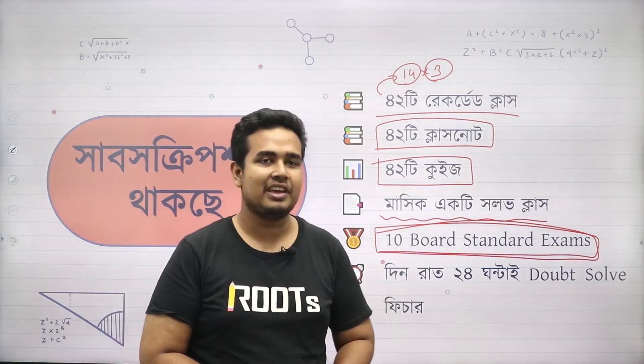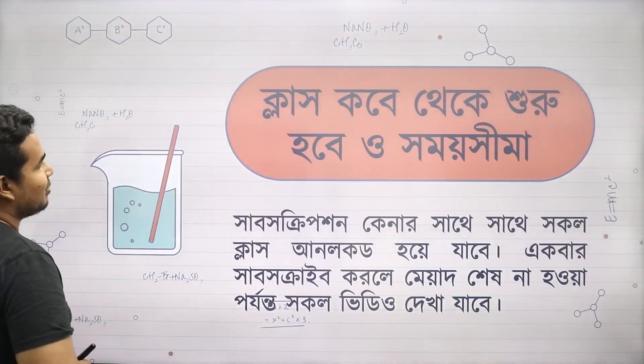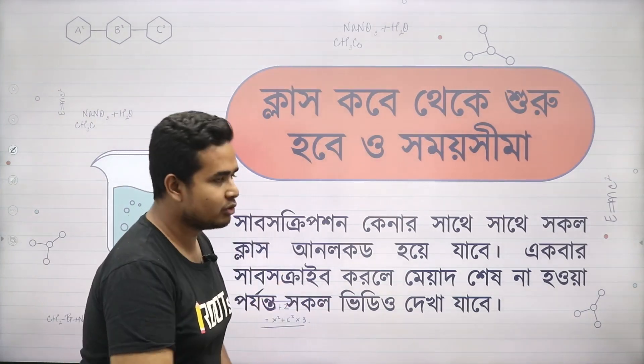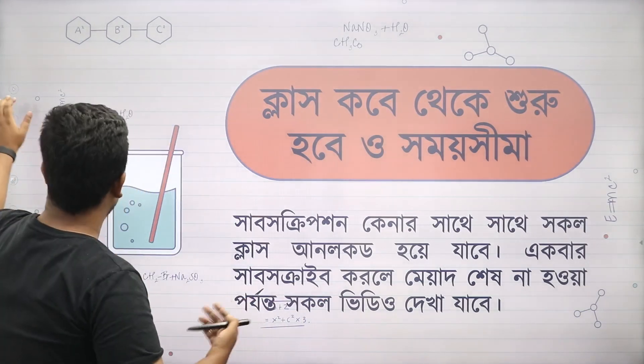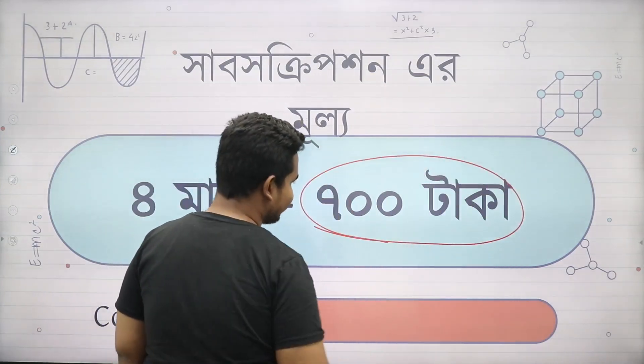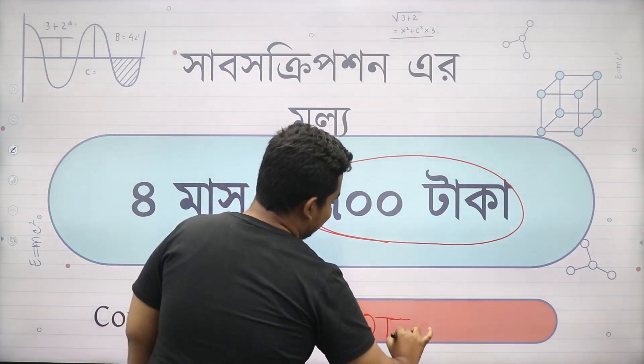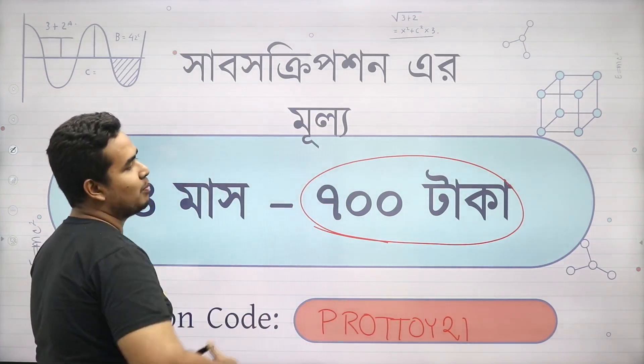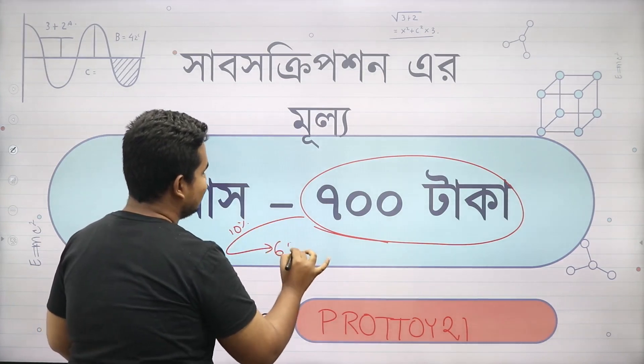But for this course, there's effective doubt solving. This course is definitely right for you. If you want to know the course price, you can get this recorded course. This course has a special discount. We will use a coupon for 21% discount, bringing the price down to 630 taka.